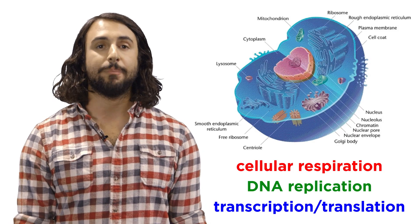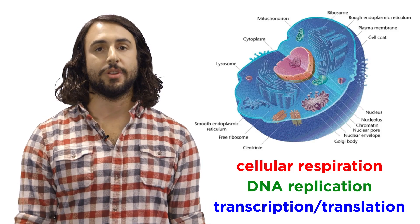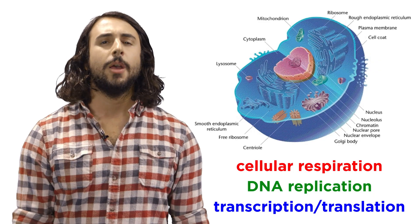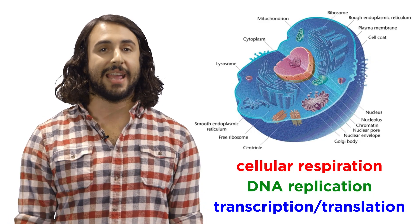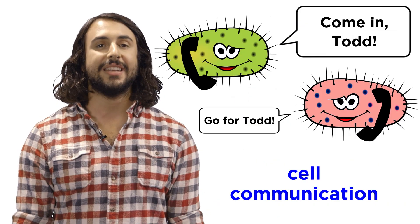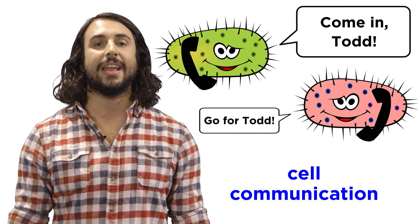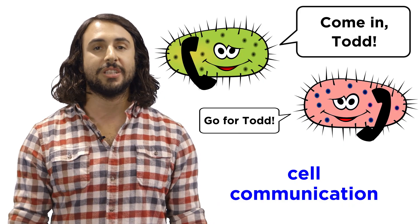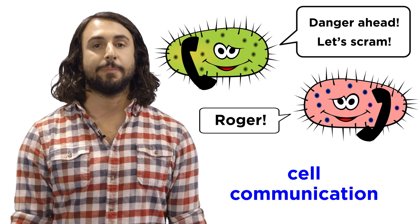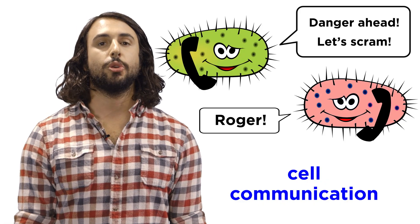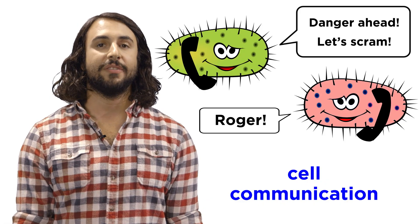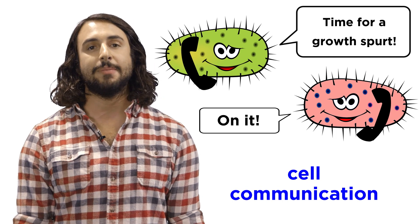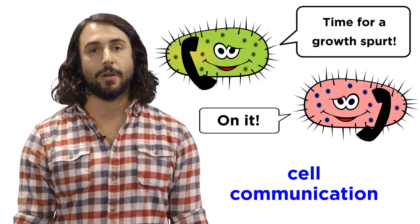We've learned about a lot of the complex biochemistry that occurs inside every single one of your cells, but it actually gets even more complicated than that, because your cells need to communicate with one another in order to respond to environmental stimuli, like potential danger, and to elicit certain behavior during various stages in your lifetime, so that your body makes the correct changes as you grow.